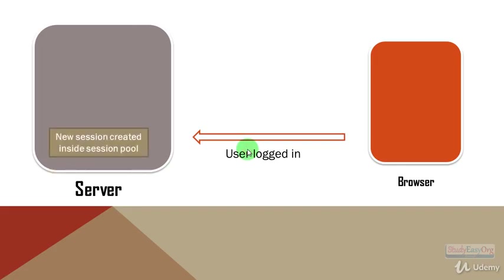Whenever a user logs in, a new session gets generated. This new session is created inside the session pool, and a specific session ID is generated and given to this new session. All the information regarding this particular session is stored in the server, and for identifying this particular session, a unique session ID is present. This session ID is automatically generated, and the programmer need not worry about any session ID. These session pools are maintained automatically by Tomcat.